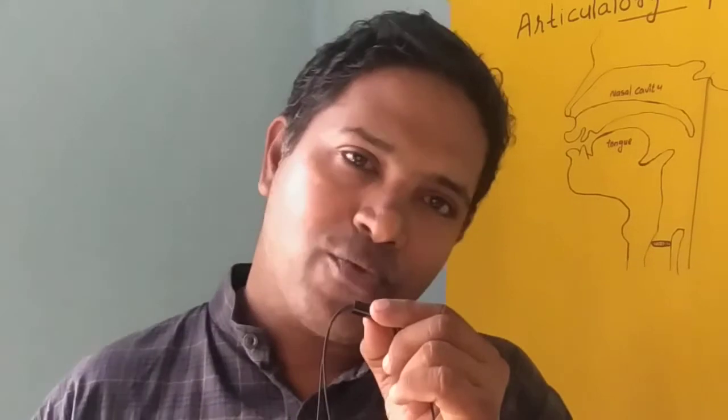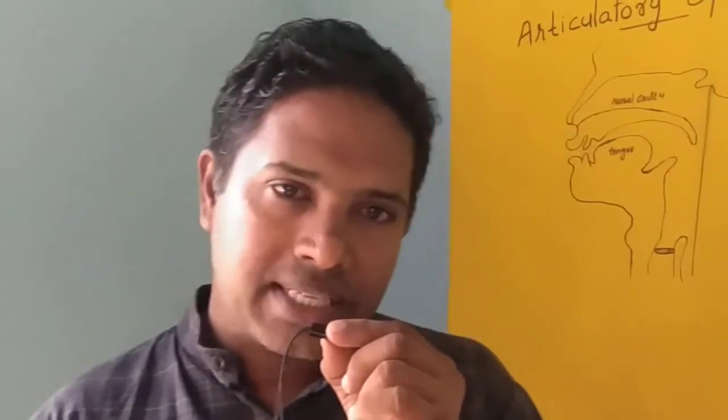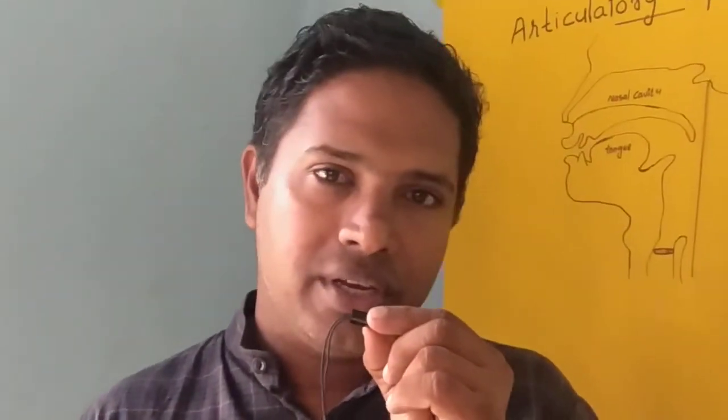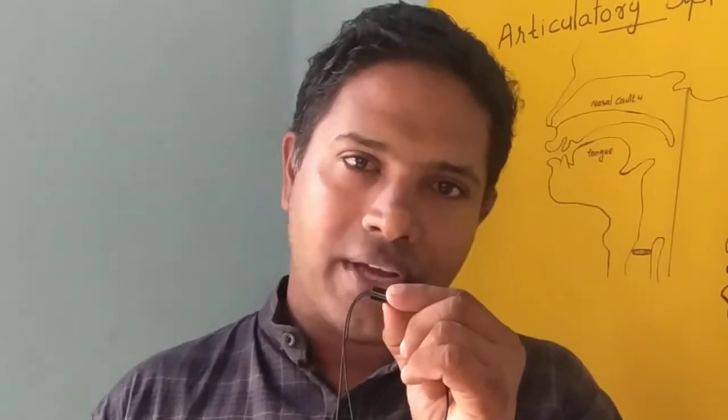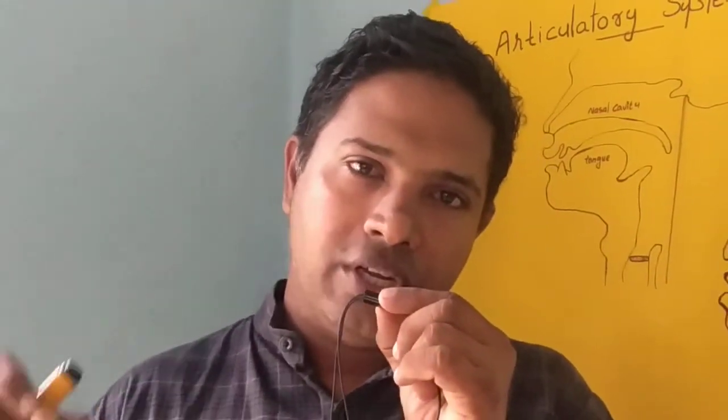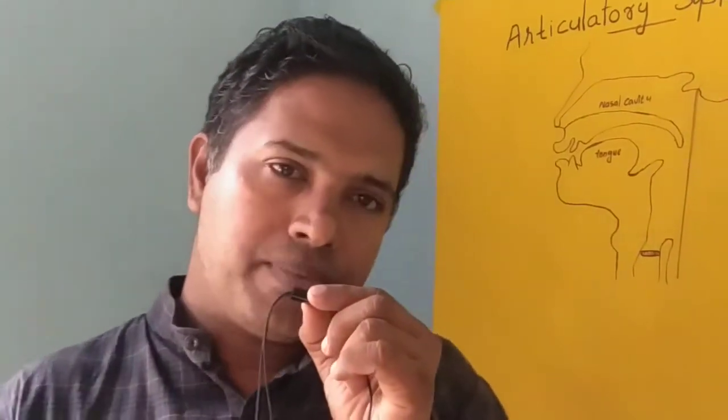The soft palate, or velum, acts like a valve, controlling the opening and closing of the nasal passage. Then the uvula — the uvula is a fleshy structure loosely hanging at the extreme end of the roof of the mouth. That is called the uvula.